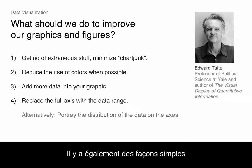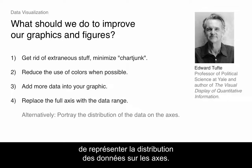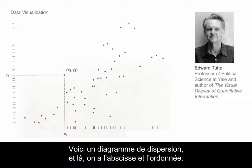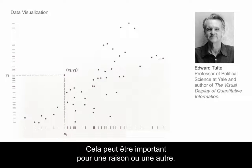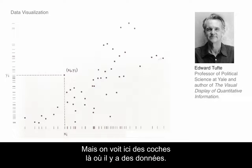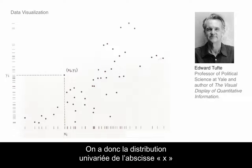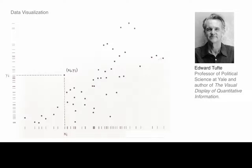There may also be simple ways of portraying the distribution of the data on the axes. Here's a scatter plot with x and y. What he has here are tick marks wherever there's data, so now you have the univariate distribution of x and the univariate distribution of y, and you can just see it visually.